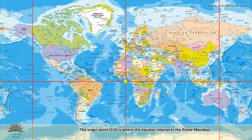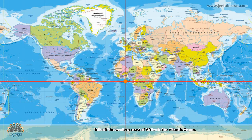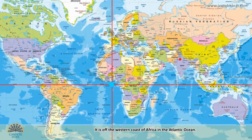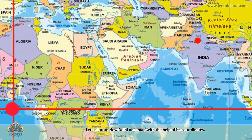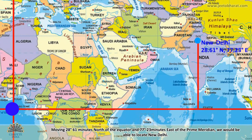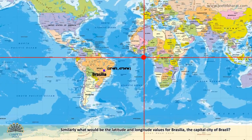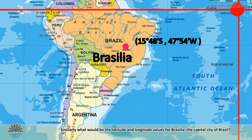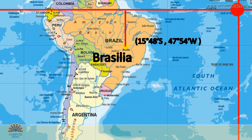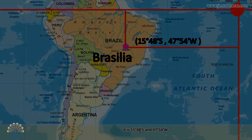The origin point 0,0 is where the equator intersects the prime meridian. It is off the western coast of Africa in the Atlantic Ocean. Let us locate New Delhi on a map with the help of its coordinates. Moving 28 degrees 61 minutes north of the equator and 77 degrees 23 minutes east of the prime meridian, we would be able to locate New Delhi. Similarly, what would be the latitude and longitude values of Brasilia, the capital of Brazil? It is 15 degrees 48 minutes south and 47 degrees 54 minutes west.